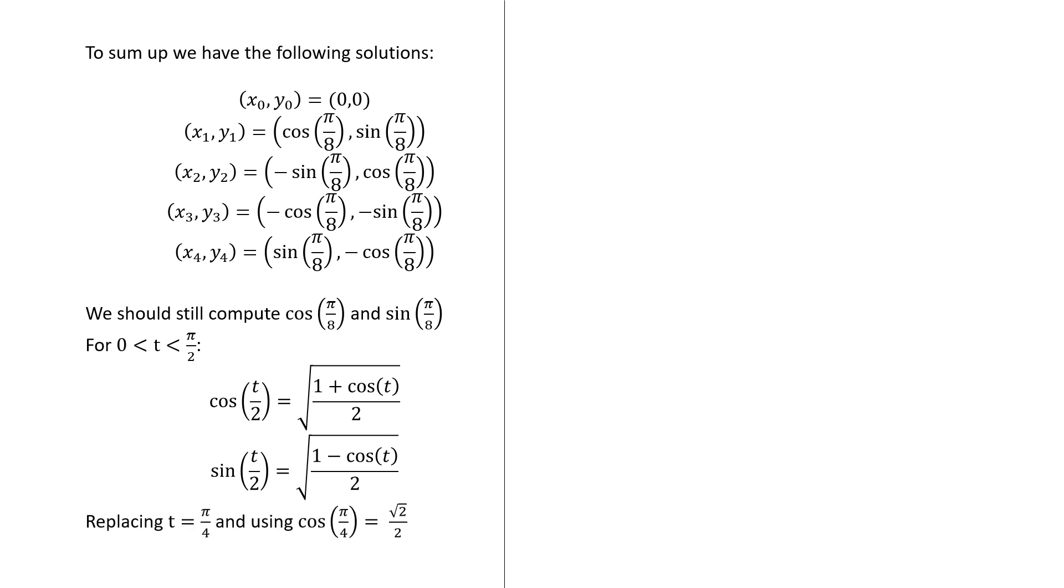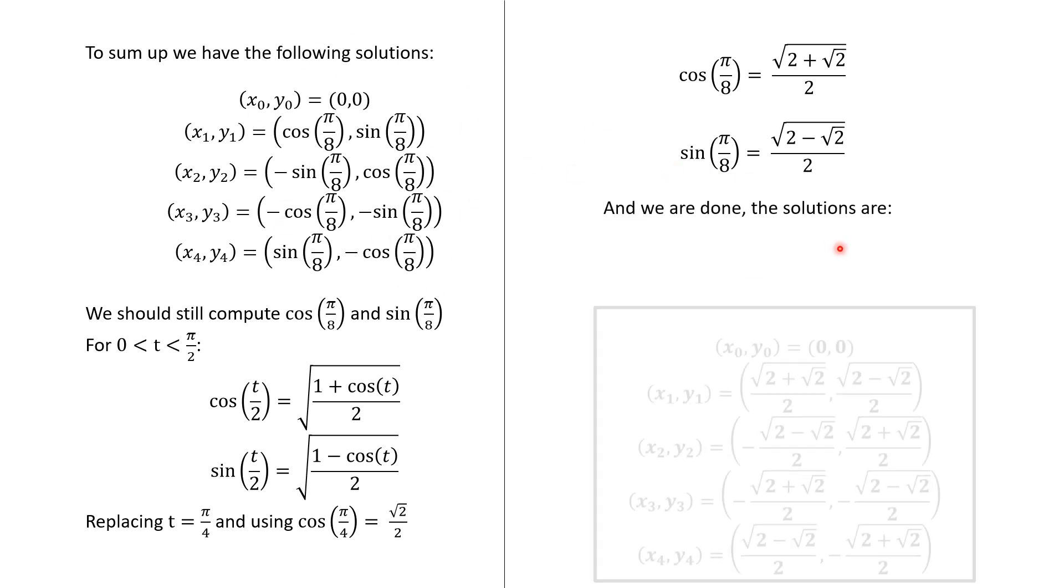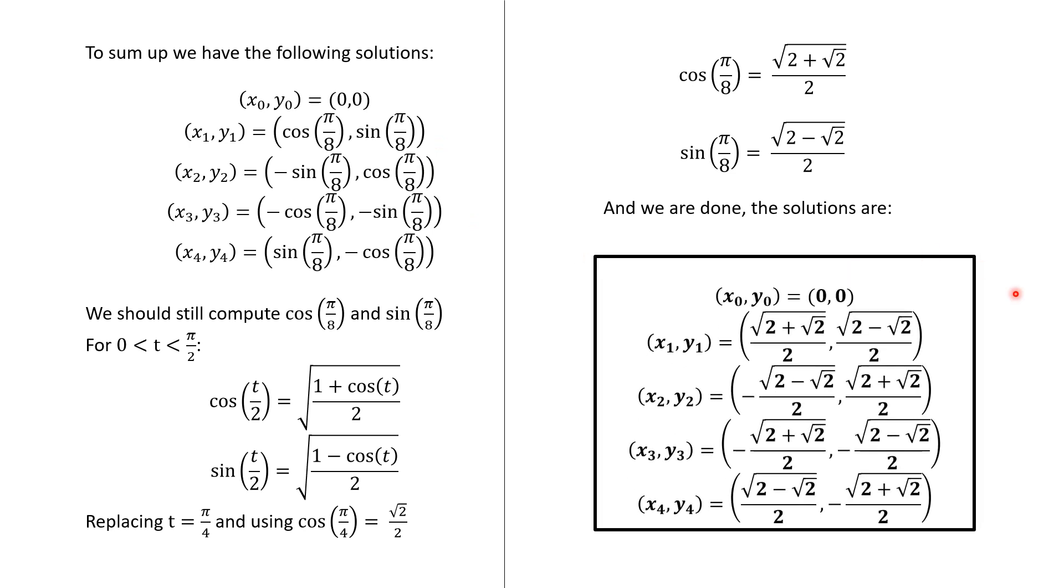In our case, we use t equals π/4 and the cosine of π/4, that is √2/2. And this gives us the closed form of cos(π/8) and sin(π/8). So replacing here, we have these solutions and we are done.